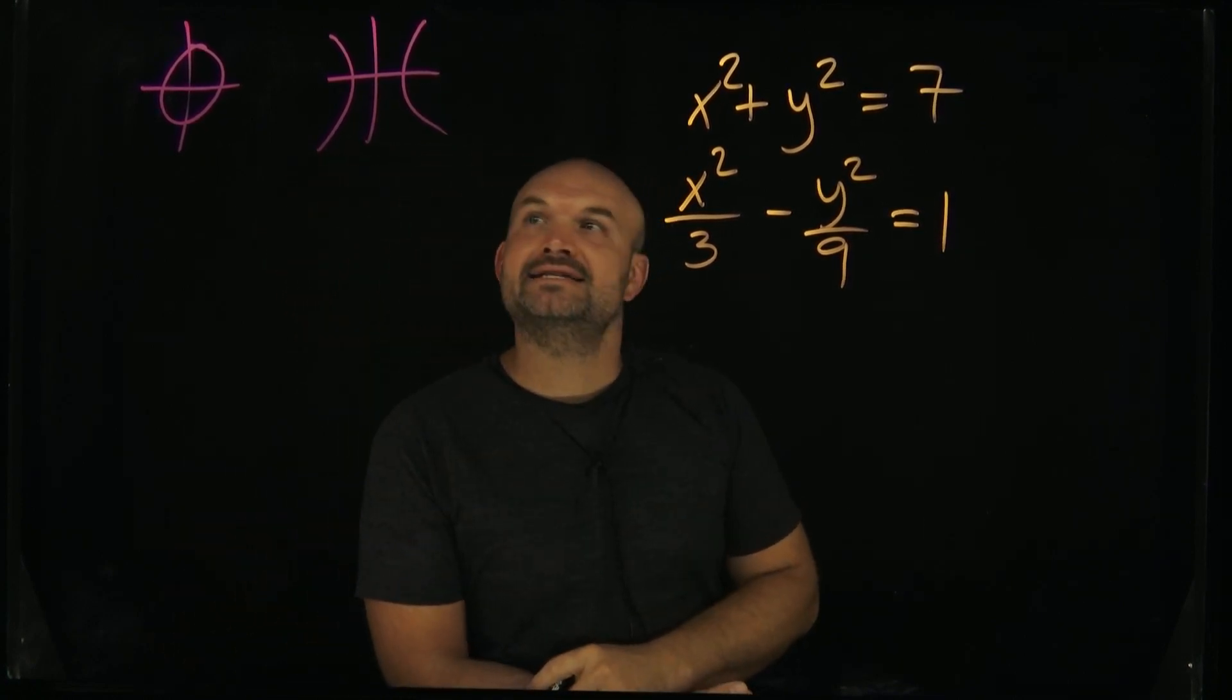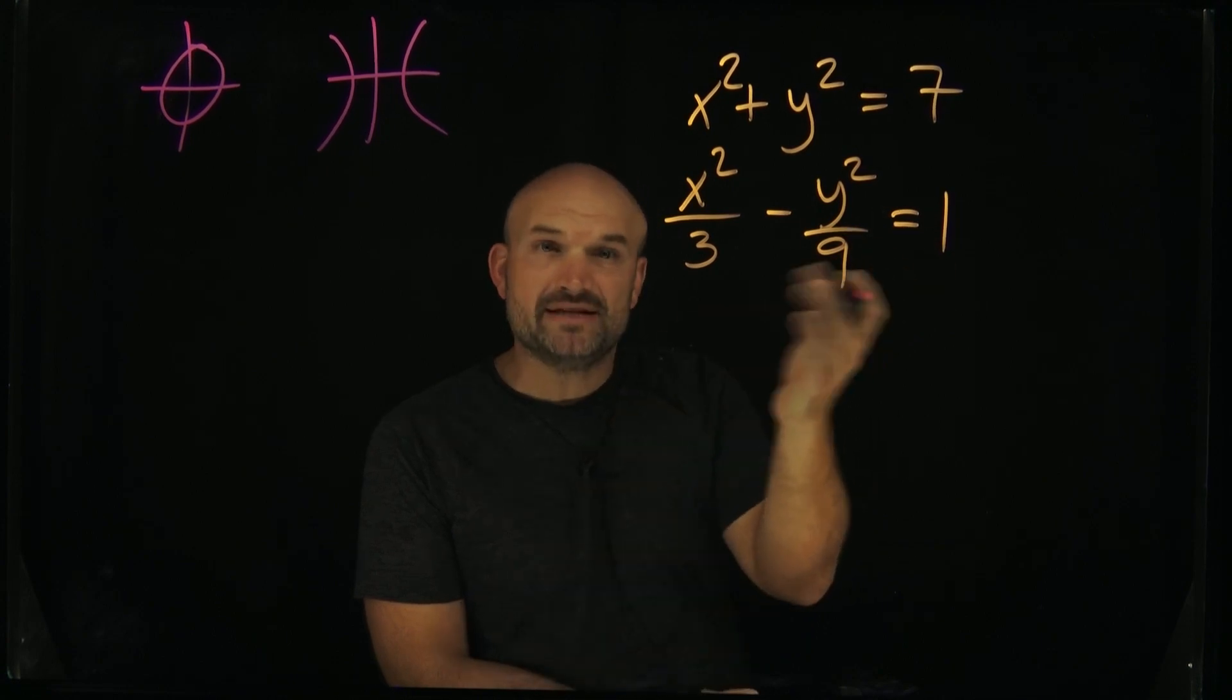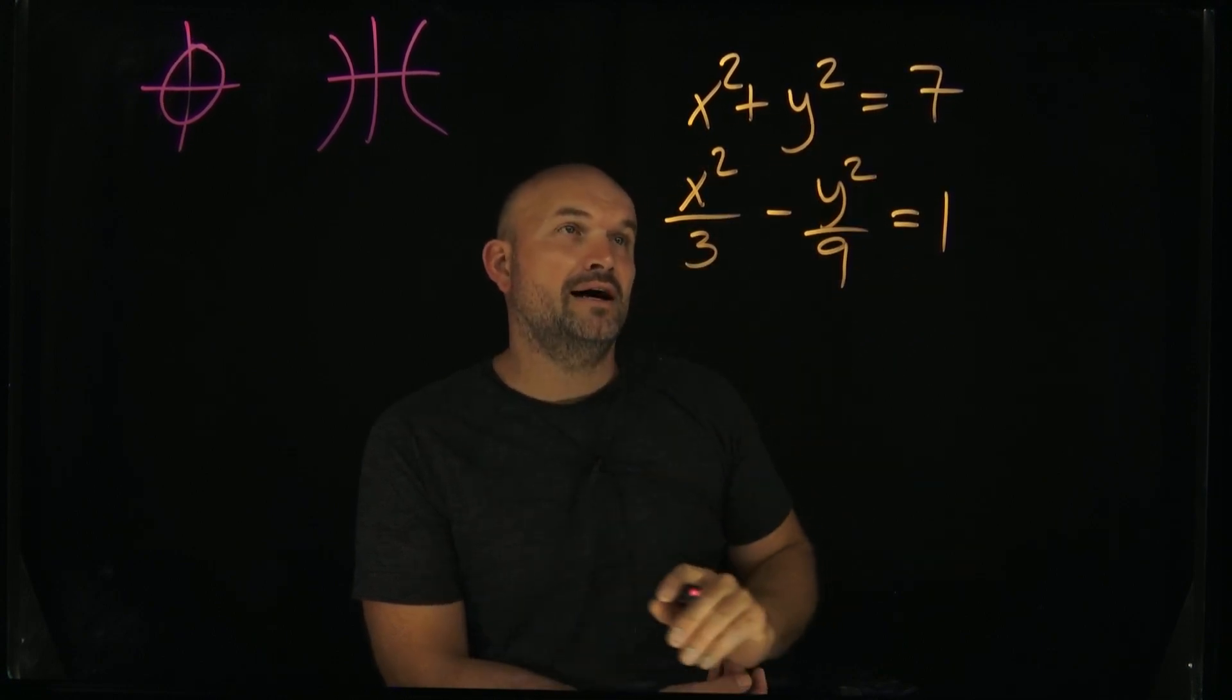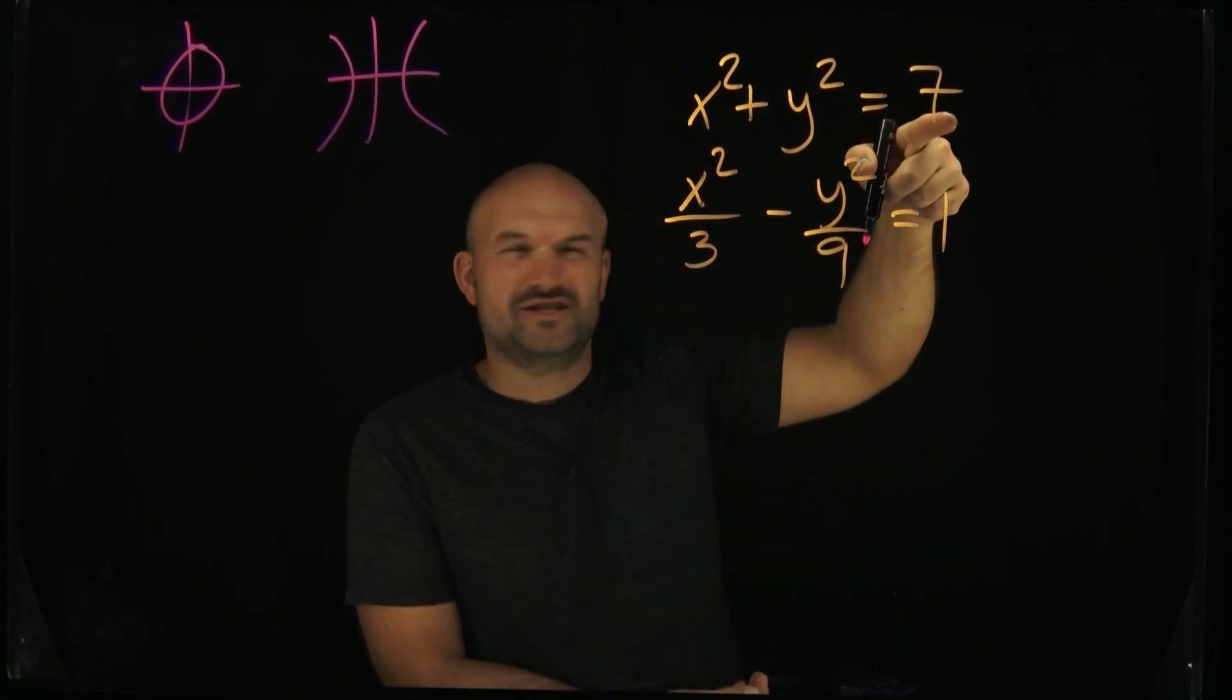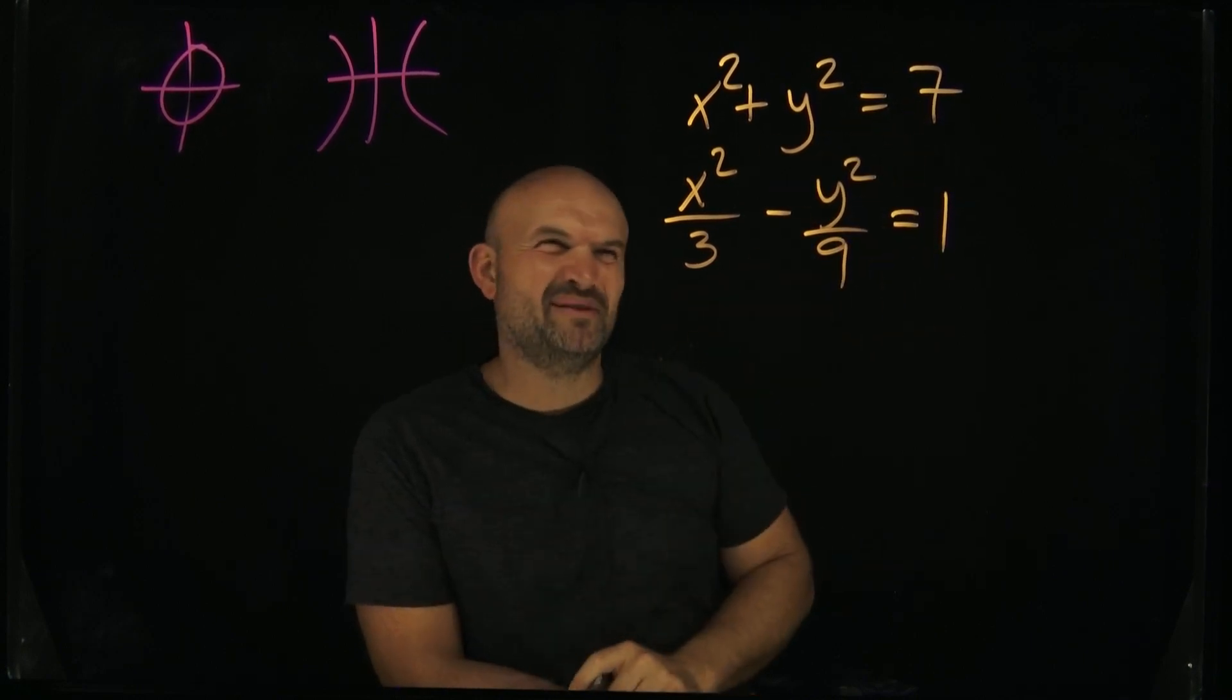But we don't know where they're at. So what we need to be able to do is, you could graph these, if you know how to graph a circle, that's just not really that nice though, because the radius is going to be the square root of seven, 2.645. And then here's a hyperbola, but I don't know if that's the best solution to be able to find these intersection points.